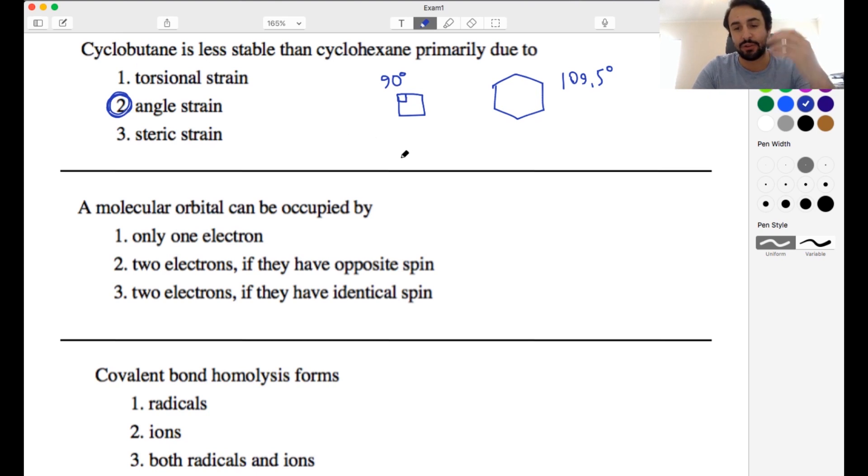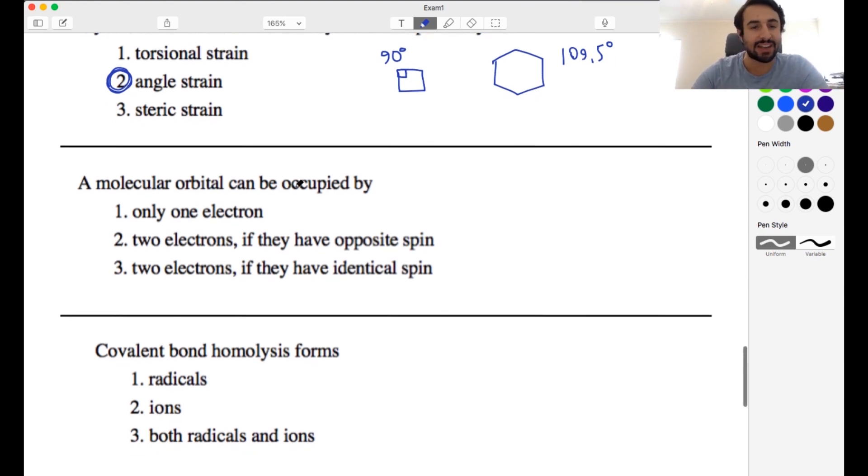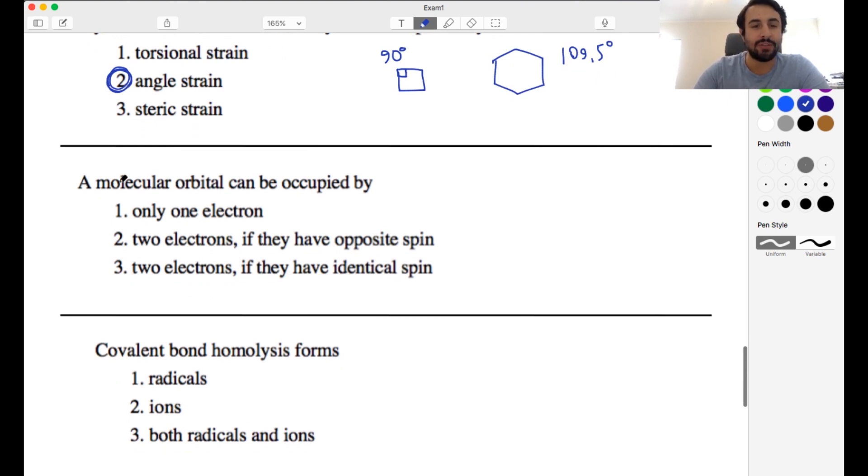It's not torsional strain. That would be like if you were looking at a Newman projection and you had some gauche interactions or something like that. That's a kind of steric strain. And it's not steric strain in general. It is due to the compression of these bond angles beyond what they would prefer to be. So that would be angle strain. Now, a molecular orbital can be occupied by—we don't even care that this is a molecular orbital. Any orbital can be occupied by a maximum of two electrons. There can be zero, one, or two electrons in any orbital, whether atomic orbital, hybrid atomic orbital, molecular orbital. And they must have, if there are two electrons, they must have opposite spin. We know that because of the Pauli exclusion principle, no two electrons in a system can have the same set of quantum numbers. So in the same orbital, they have three out of the four quantum numbers identical. But that fourth one, the spin quantum number, will be opposite so that it does not violate the Pauli exclusion principle.